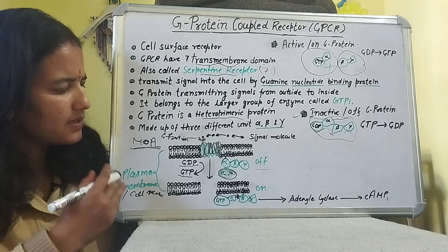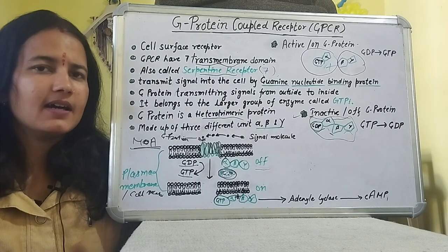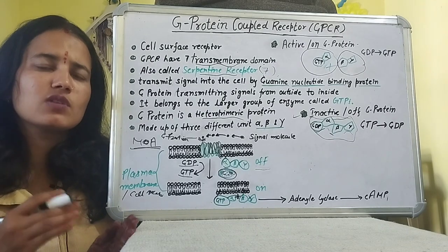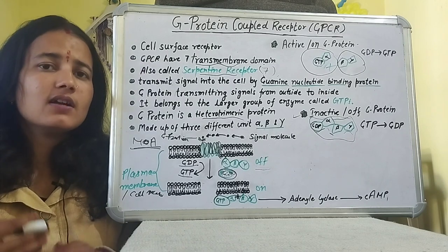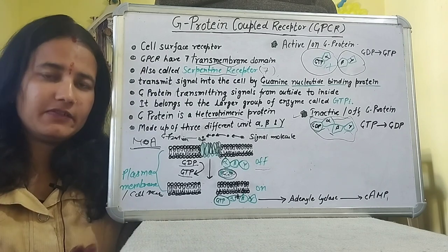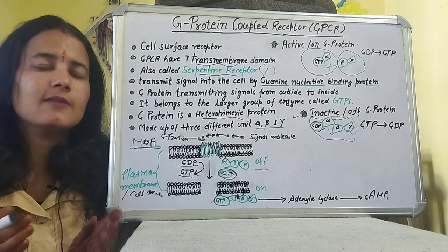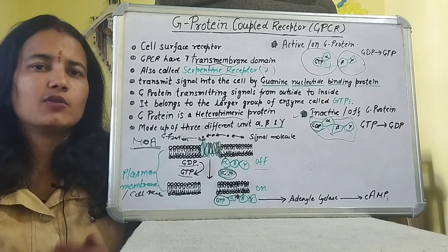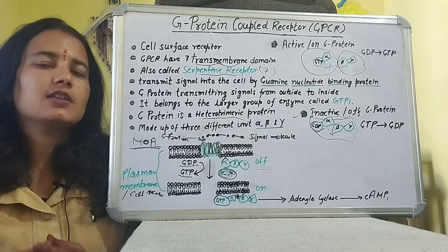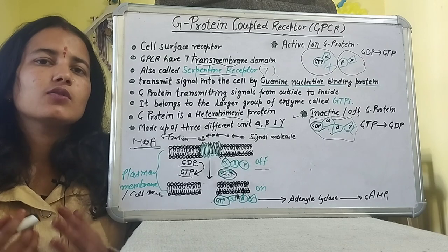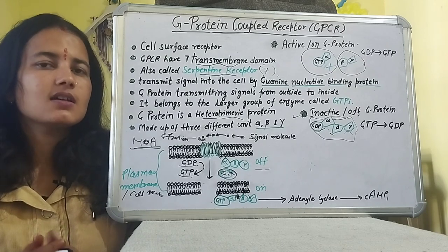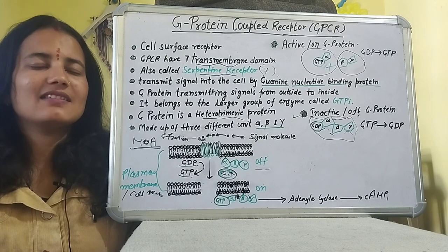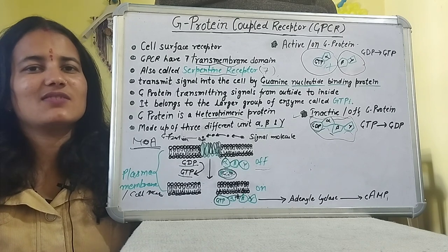This was a brief overview of GPCR. The complete signalling pathway — including how the signal reaches the nucleus, how transcription is activated, how mRNA is synthesized and converted into protein — will be covered in the next video. If you like this video, please like, share, and subscribe to my channel. Thank you for watching.